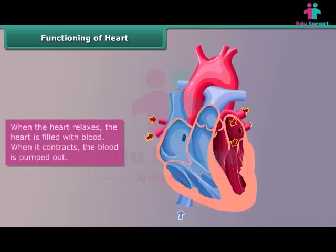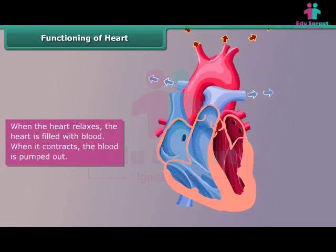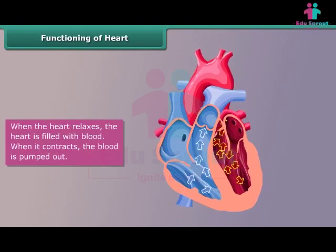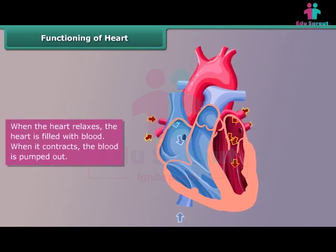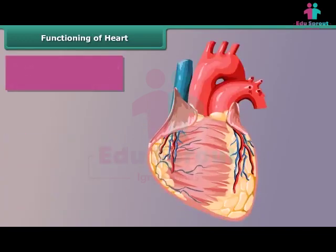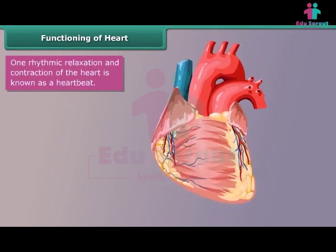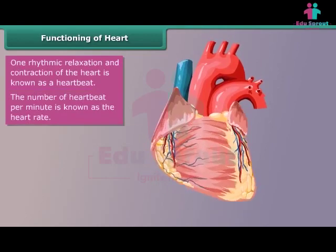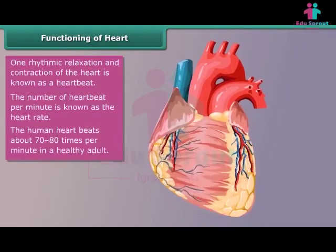The heart pumps blood through a rhythmic pattern of relaxation and contraction. When the heart relaxes, it is filled with blood; when it contracts, the blood is pumped out. One rhythmic relaxation and contraction of the heart is known as a heartbeat. The number of heartbeats per minute is known as the heart rate. The human heart beats about 70 to 80 times per minute in a healthy adult.